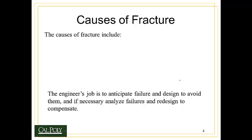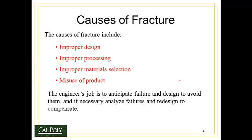So what are some possible causes of fracture? The causes are things you may not have considered. For example, improper design — if we don't design to support the loads, we risk fracture. Also improper processing, how we manufacture the material. Improper material selection — not choosing the right material for the right application — and misuse of product. Users not using the product for what it was intended can cause it to fracture. The engineer's job is to anticipate all of these possible causes of failure and design to avoid them, including misuse of the product, which can be difficult to predict.